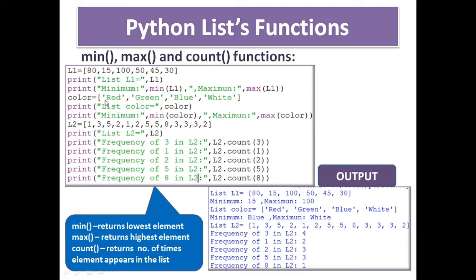Now with a string list — a list named color has red, green, blue, white. Printing min and max of color gives: minimum is blue (starts with B) and maximum is white (starts with W). So min and max find the result lexicographically, in dictionary order, for strings. It also works for numeric values. The condition is that all elements must be of similar data type for it to work properly.